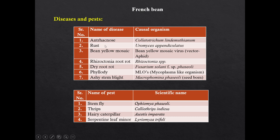Diseases and pests of French bean include anthracnose, rust, bean yellow mosaic, Rhizoctonia root rot, dry rot and phyllody. The phyllody disease is important to remember because it is caused by a unique organism — MLO (mycoplasma-like organism). Phyllody disease is also found in radish. Pests include stem fly, thrips, hairy caterpillar and serpentine leaf miner.